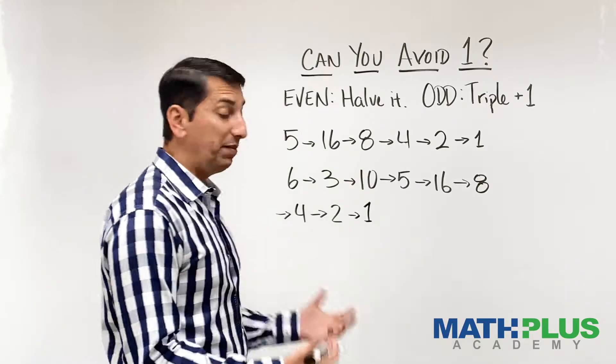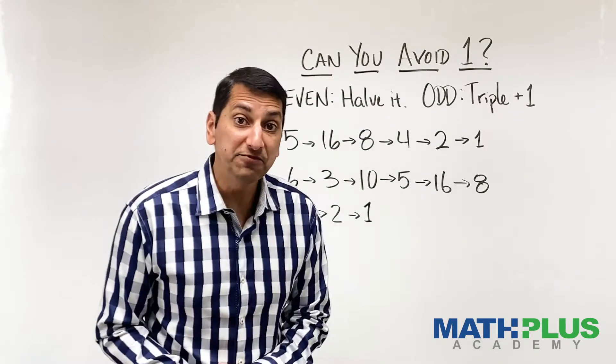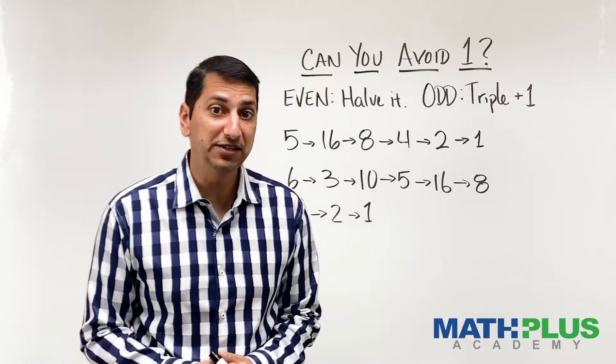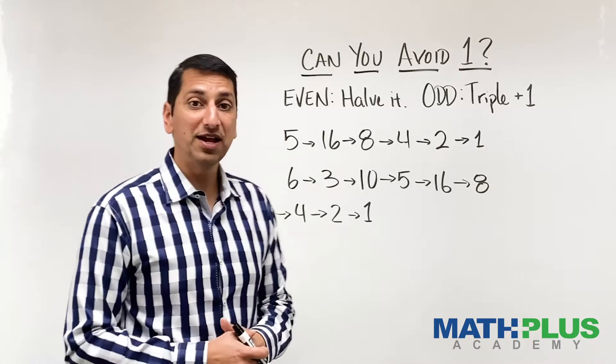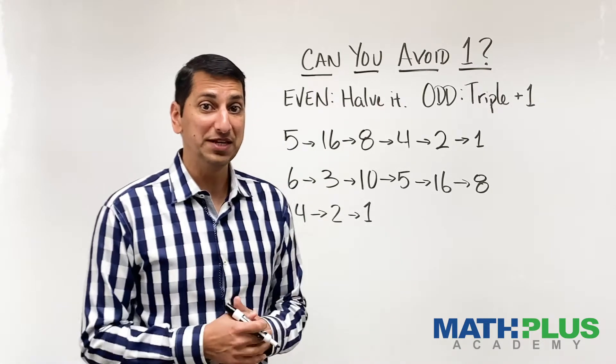Now, you might be wondering, like, does it always end in the four, two, one loop? Is there a way to avoid the four, two, one? So I want you to kind of think about, like, can you avoid this loop? Or do you always end up here?